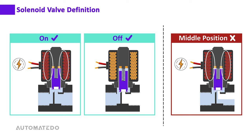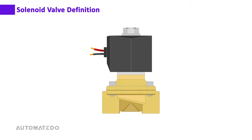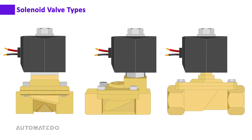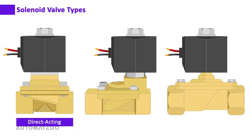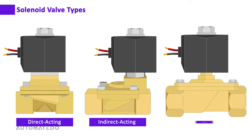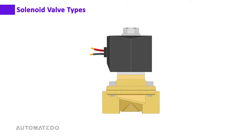The way solenoid valves work differs from each other, which is why we have three main types based on their operating principle: direct acting, indirect acting, and semi-direct acting. First, we take a look at the direct acting solenoid valve.